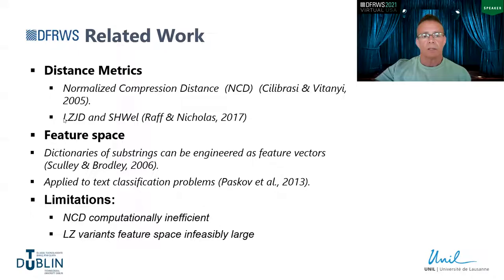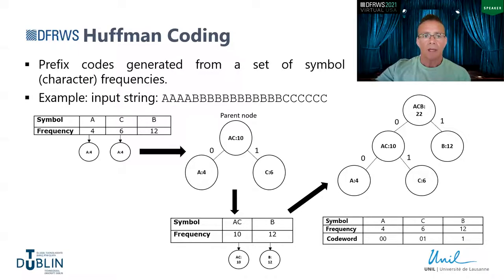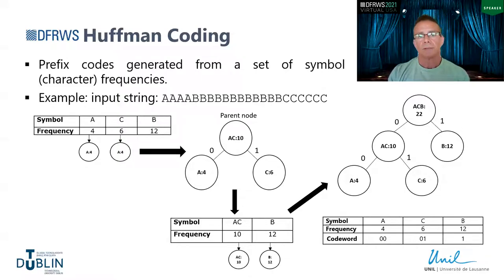I highlight LZJD and Schwell because, although they are essentially distance-type metrics, they do produce a feature set based on the LZ algorithm that is essentially a feature vector, making them in some ways similar to the EHF algorithm we produced. Based on those findings, I wanted to find an algorithm that was efficient and produced a small feature space, so we settled on Huffman coding, essentially because of the way the algorithm works.